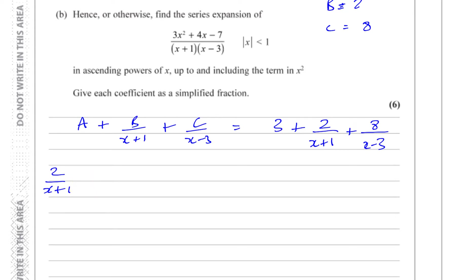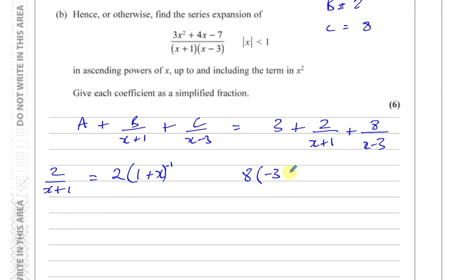I'll write 2 over (x+1) as 2 times (1+x) to the power of minus 1. And 8 over (x-3) I'm going to write as 8 times (-3+x) to the power of minus 1. I'll explain why I'm doing that.